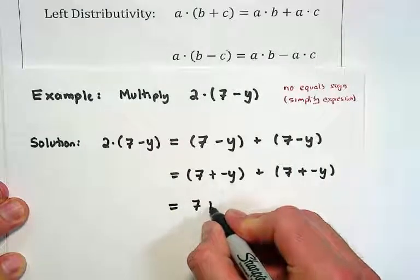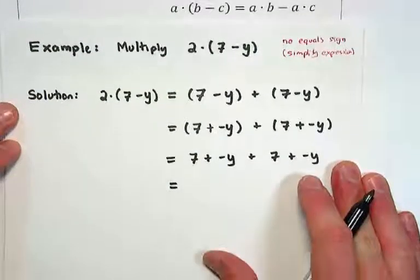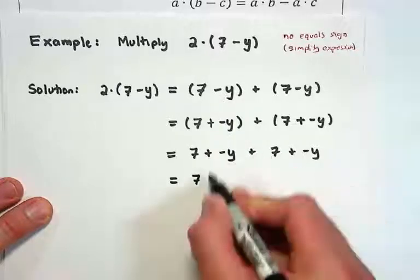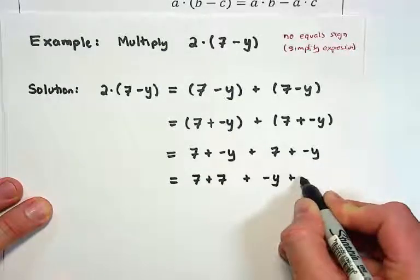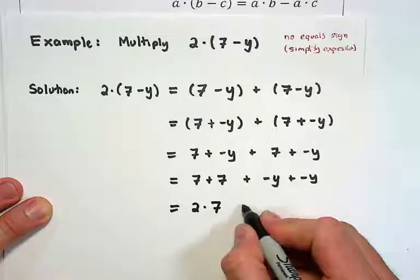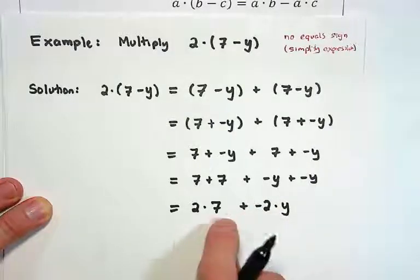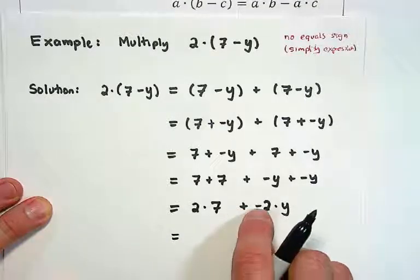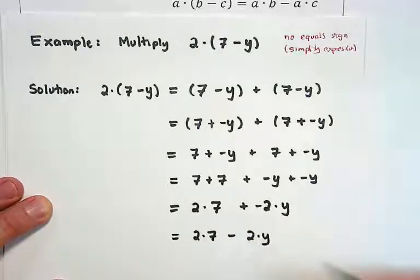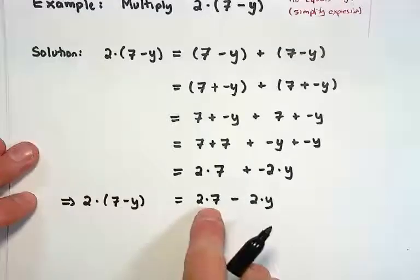We can group terms any way that we'd like — we can just drop the parentheses. Because addition is also commutative, I can swap the order. I can bring the 7's together in front and the negative y's together in the back. In this case I have 7 added to itself twice, which is 2 times 7. I have negative y added to itself twice, which is negative 2 times y. The addition of a negative can be written as subtraction, so this becomes 2 times 7 minus 2 times y. This implies that 2 times (7 minus y) equals 2 times 7 minus 2 times y.